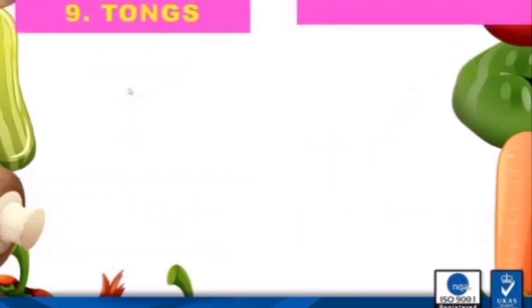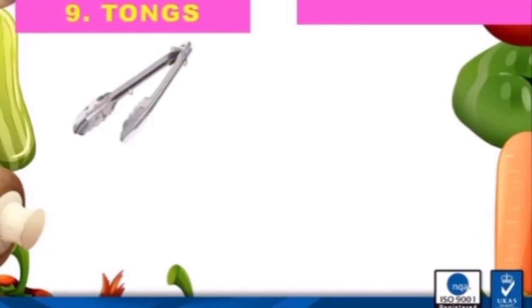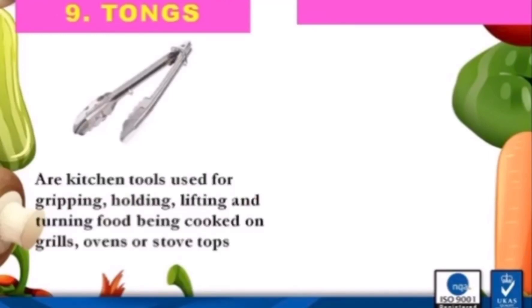Number nine is tongs. This is the picture of tongs. Tongs are kitchen tools used for gripping, holding, lifting, and turning food being cooked on grills, ovens, or stovetops. Food tongs are used to grip or lift food instead of holding it directly with your hand.